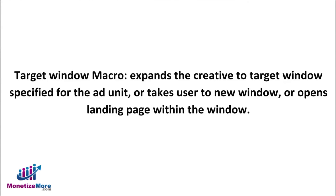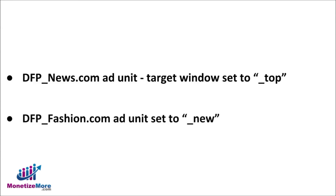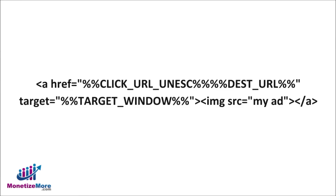When you want the creative to expand to the target window specified for the ad unit, or take the user to a new window or open up a landing page within the window, then the Target Window Macro is the macro you want to embed. For example, consider the dfp_news.com ad unit with a target window set to underscore top and the dfp_fashion.com ad unit set to underscore new. If the target_window macro is included in the creative's code, it will expand to underscore top for users at dfp_news.com and underscore new for users of dfp_fashion.com.